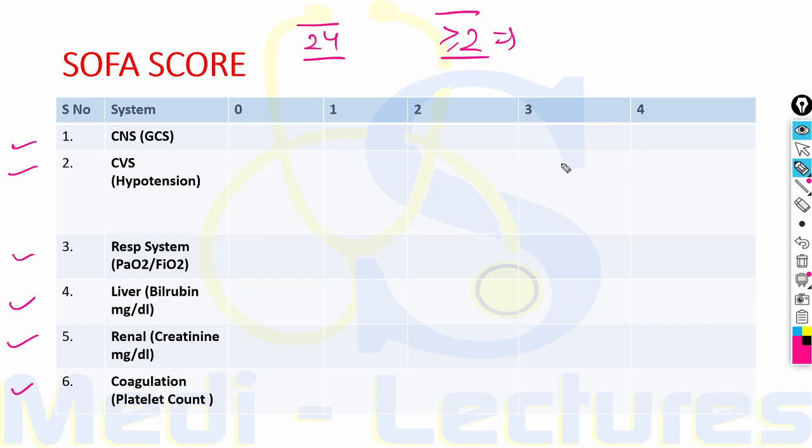For CNS, Glasgow Coma Scale is used: value of 15 is score 0, 13 to 14 is 1, 10 to 12 is 2, 6 to 9 is 3, and less than 6 is 4. For CVS, hypotension is used as a marker: no hypotension is score 0, mean arterial pressure less than 70 is score 1.